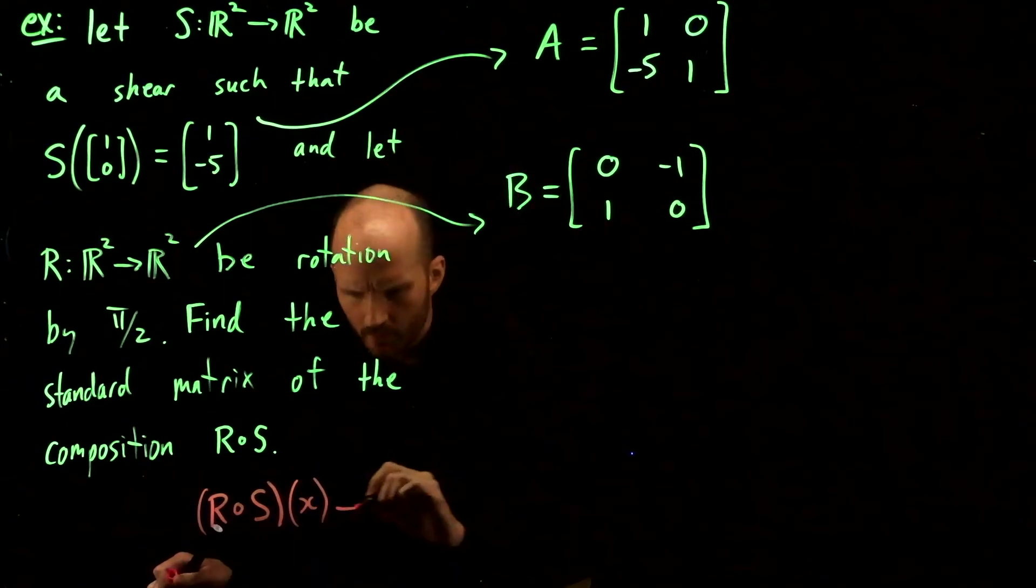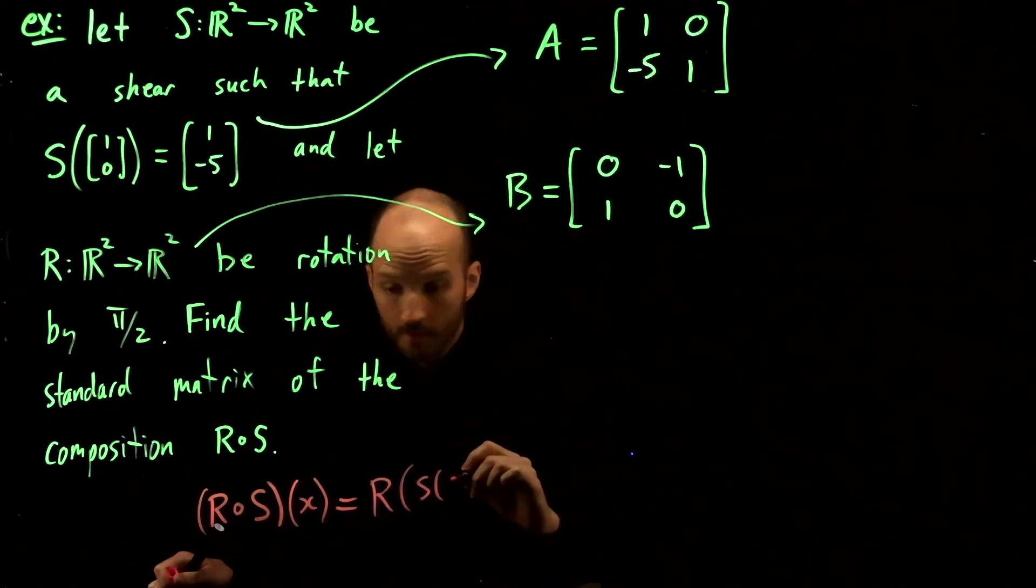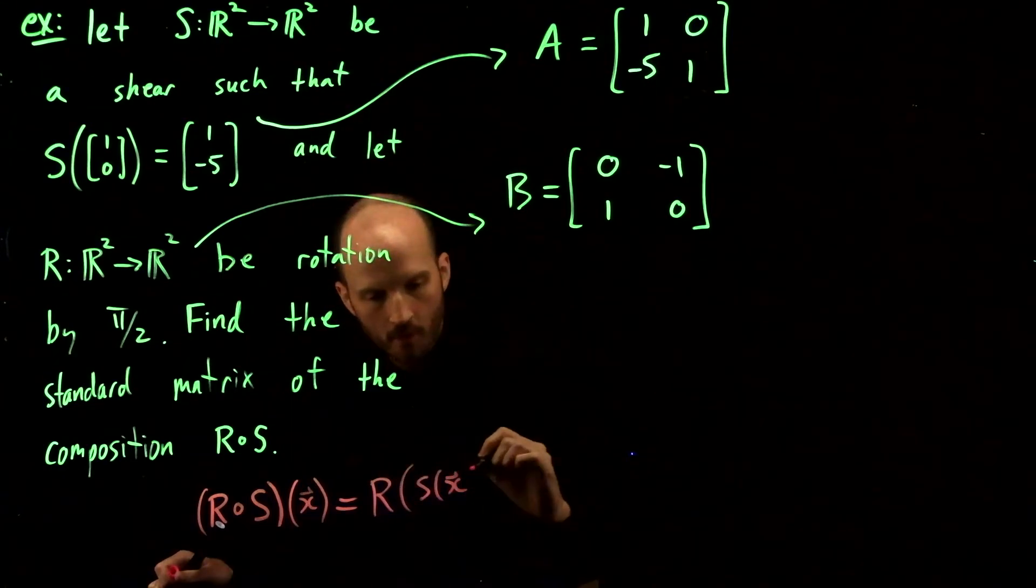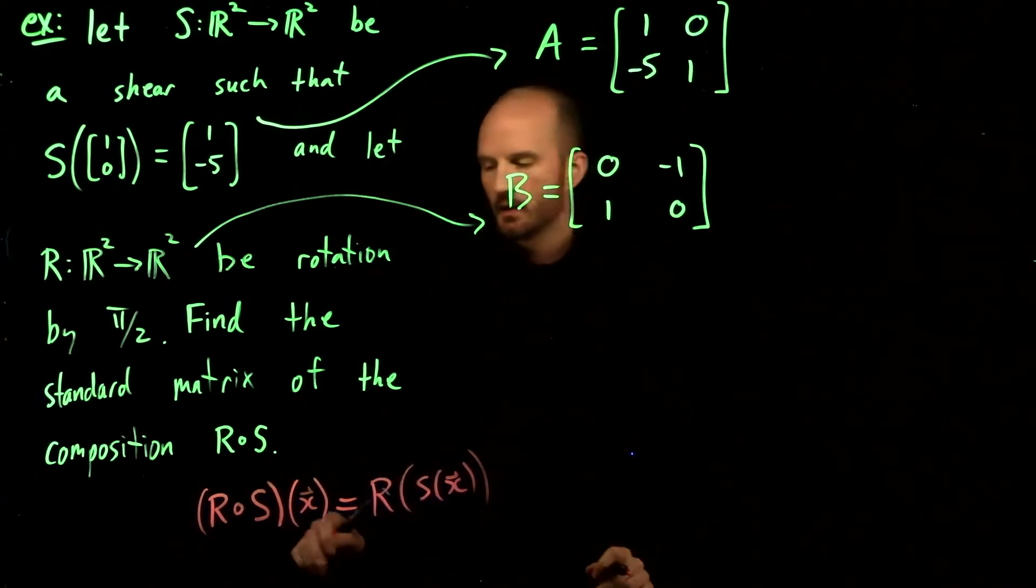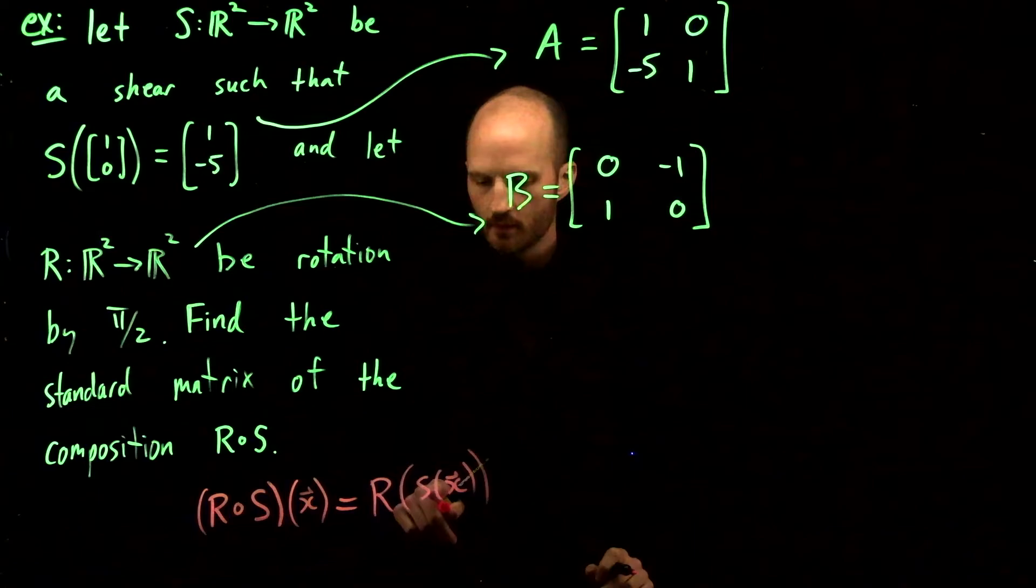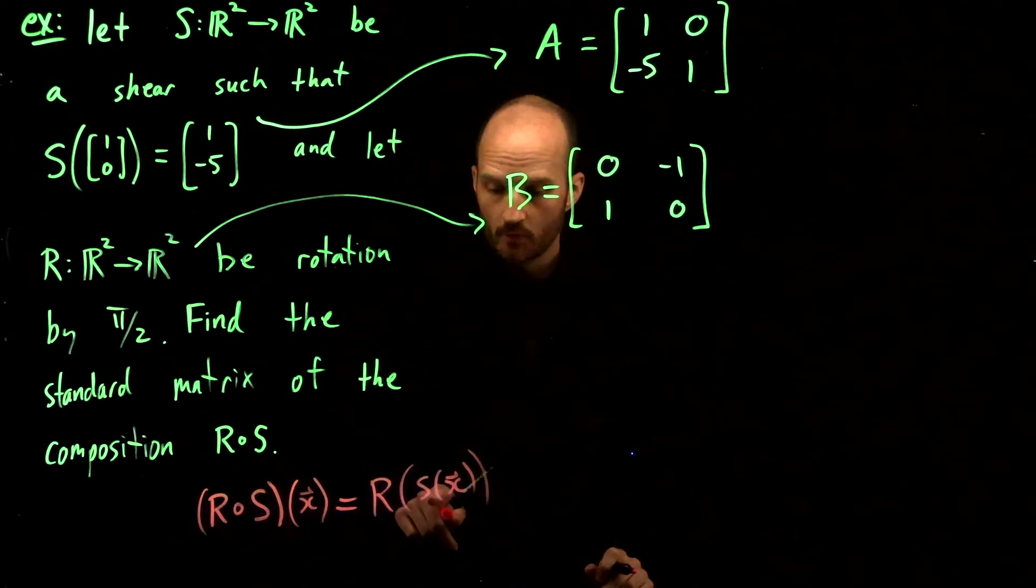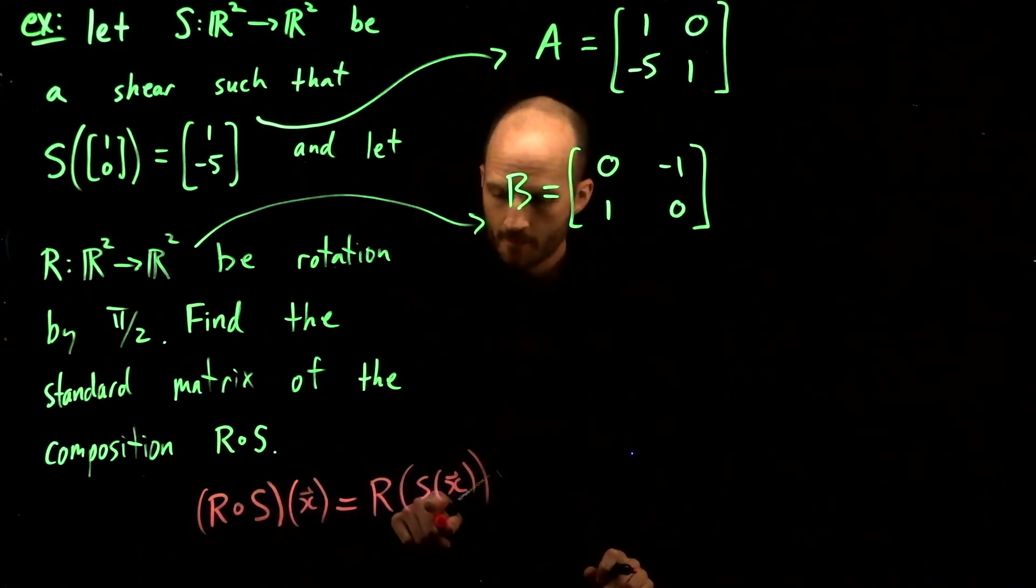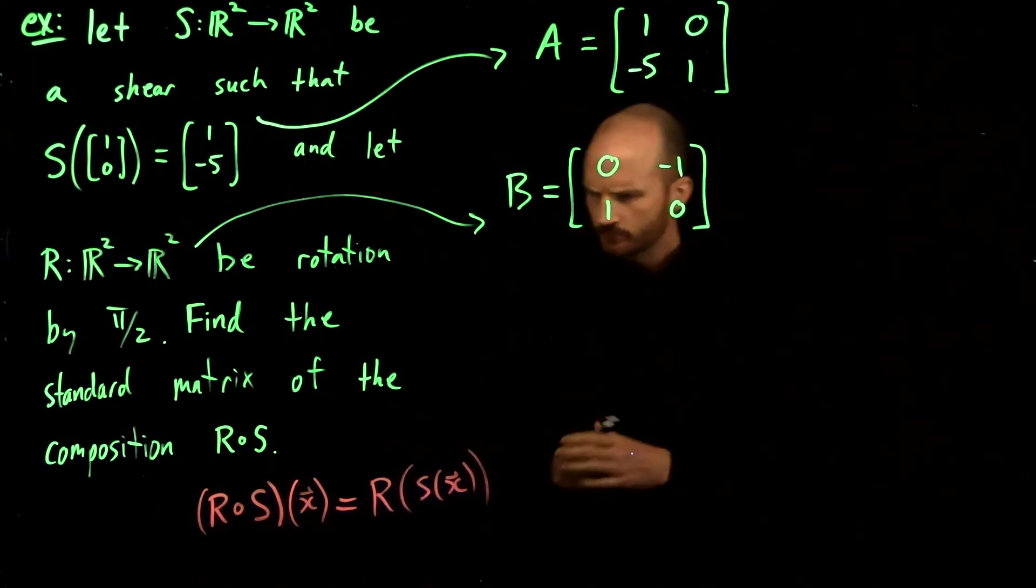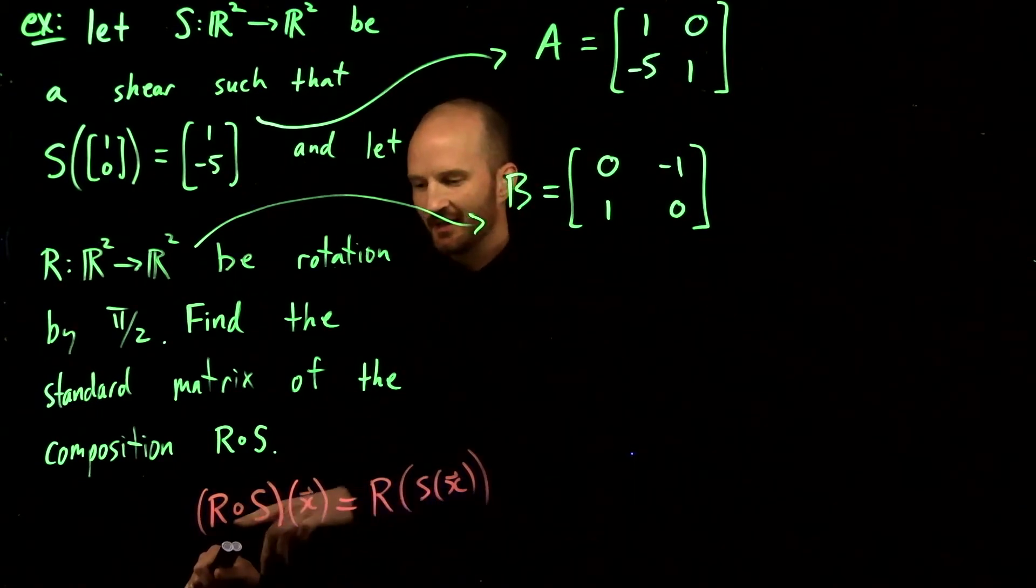I want you to remember that this little circle means a transformation that, when applied to a vector x, applies S first and then R second. That's a bit confusing. In English, we read left to right, usually.